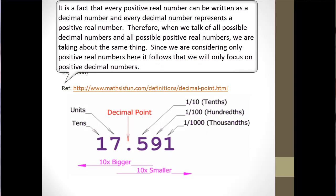It is a fact that every positive real number can be written as a decimal number, and every decimal number represents a positive real number. Therefore, when we talk of all possible decimal numbers and all possible positive real numbers, we are talking about the same thing.